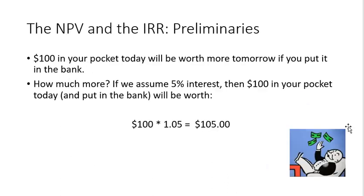First, let's examine project selection methods. You've already been introduced to project selection methods in your assignment — you were introduced to the NPV. What you may not realize is how closely related the NPV and the IRR, or the internal rate of return, really are. All of them are based upon discounted cash flows. Here's how this works: $100 in your pocket today will be worth more tomorrow if you put it in the bank. For example, if you get 5% interest, then $100 today will be worth $105 tomorrow.